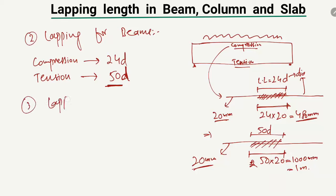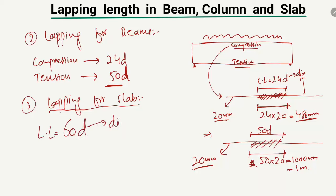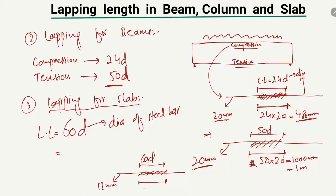The third case is for slabs. For slabs, the lapping length formula is 60D — lapping length equals 60 times the diameter of the steel bar. For example, this is one bar and this is another bar overlapped. If the bar diameter is 12 millimeters, the lapping length is 60 × 12 = 720 millimeters. So 720 millimeters is the lapping length for a 12mm bar used in a slab member.